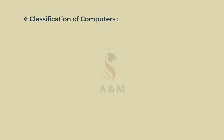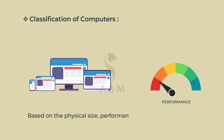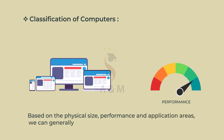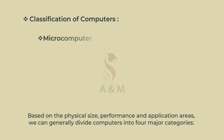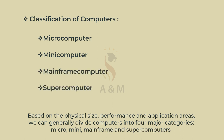Classification of Computers. Based on the physical size, performance and application areas, we can generally divide computers into four major categories: Micro, Mini, Mainframe and Supercomputers.